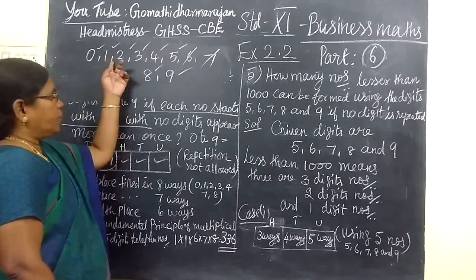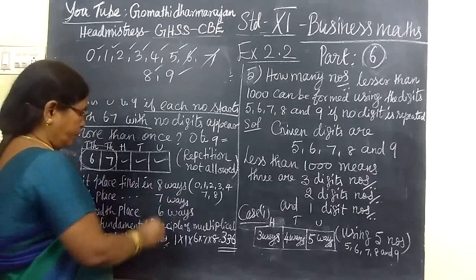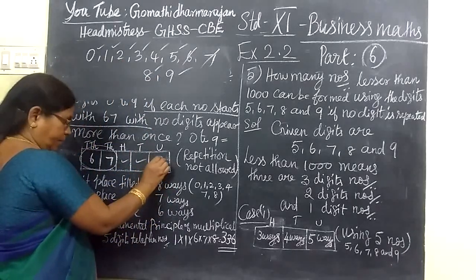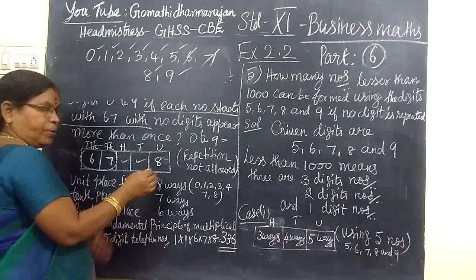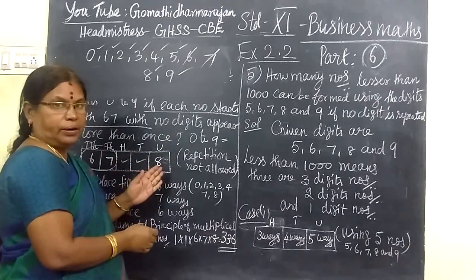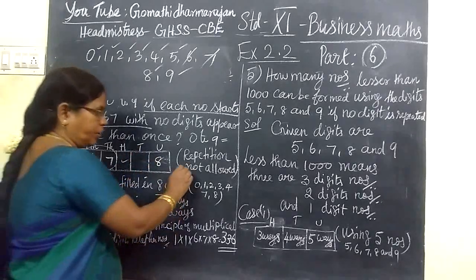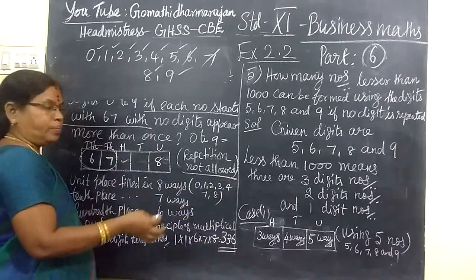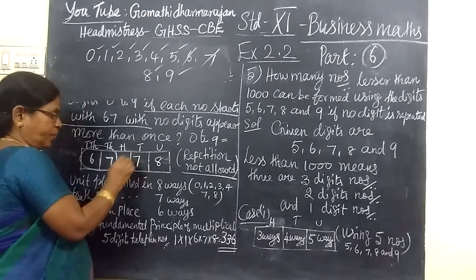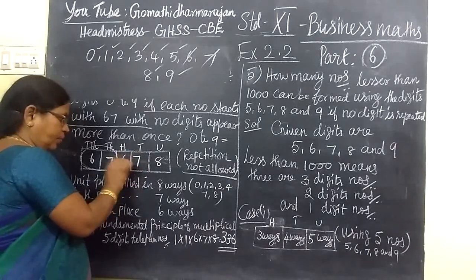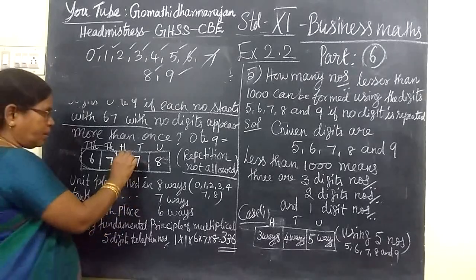In the next position, 1 way. So this can be filled in 8 ways. If 1 number is taken, that should not be repeated in the next place. Repetition is not allowed. So this can be filled in 7 ways. Here we can fill in 6 ways.